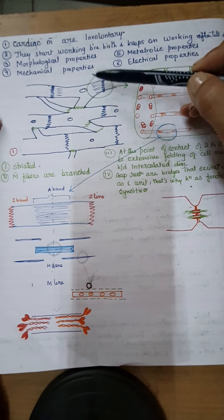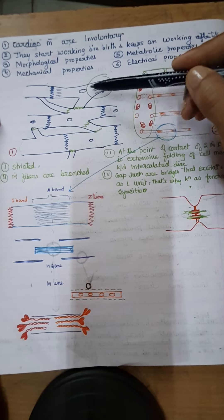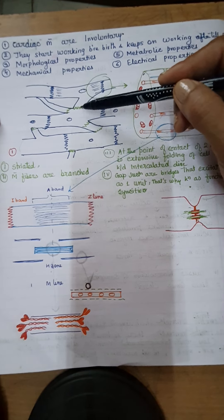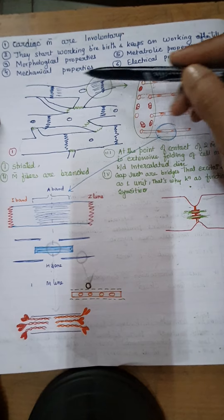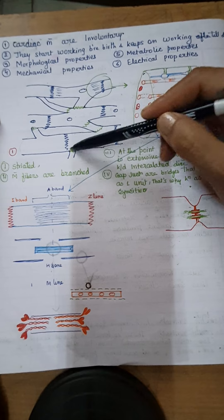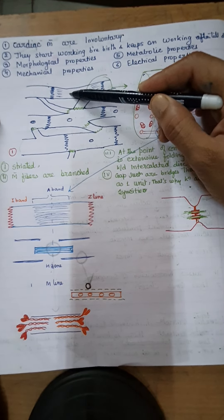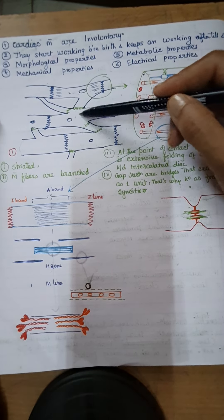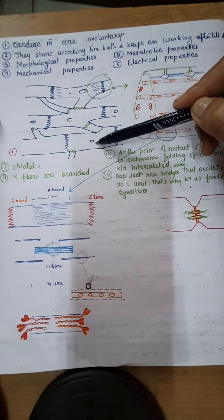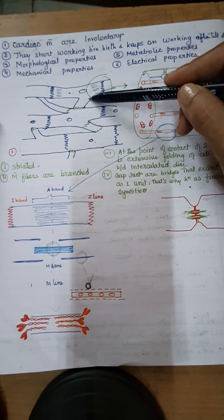This is the diagram of the cardiac muscle fibers — cardiomyocytes. These cardiomyocytes are connected through branches; one muscle fiber is connected to another through branches so that whenever an electrical conduction wave reaches one muscle fiber, it conducts very fast to the next muscle fiber. So the first structural property of cardiac muscle is that they are branched.